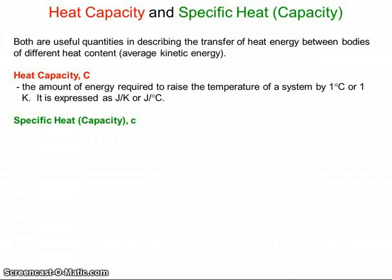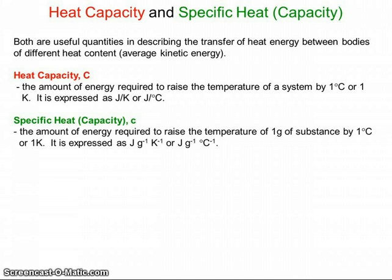The next is specific heat capacity, and we're going to use a small c for this. Essentially I'm defining it as the amount of energy required to raise the temperature of now one gram of a substance by one degree Celsius or one Kelvin. So now we've taken out the whole system and we're looking at this particular substance. This is really the gram specific heat. There's also a molar specific heat that would deal with one mole of a substance. So our units become joules per gram per degree Celsius.